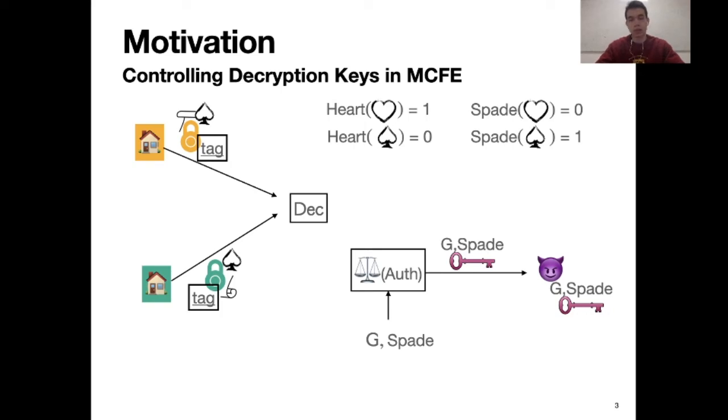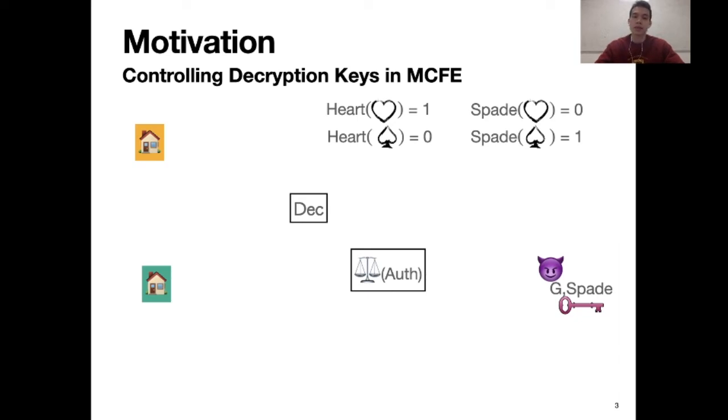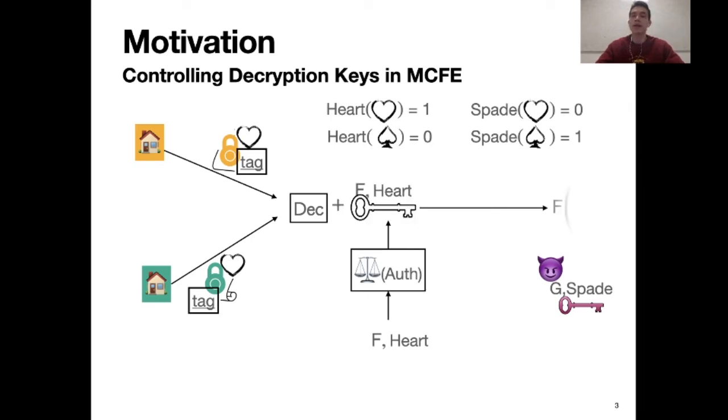For instance, initially we imagine that the malicious decryptor receives some functional key which allows him to decrypt the client's ciphertext. Later on, the clients in the system want to revoke this malicious decryptor from decrypting their future ciphertext. They can do so by encrypting their individual data under some different attributes, which are still valid with respect to some other functional decryption key which can be possessed by honest decryptors, so as to allow correct decryption.